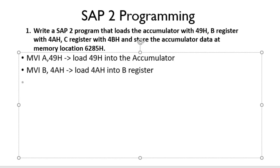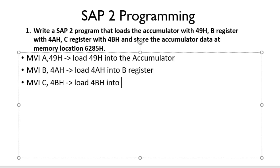Now for the C register — we need to load C register with 4BH. The same MVI instruction will do our job. So MVI C 4BH. This instruction will load 4BH into the C register.